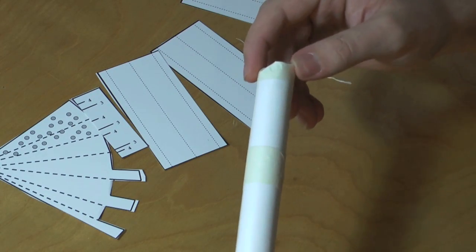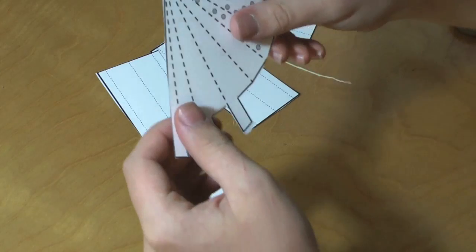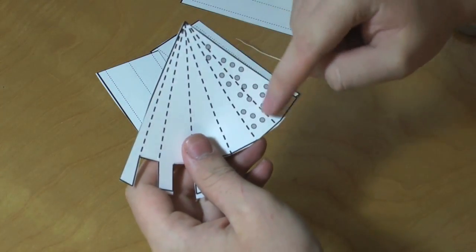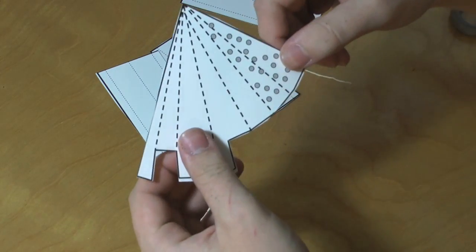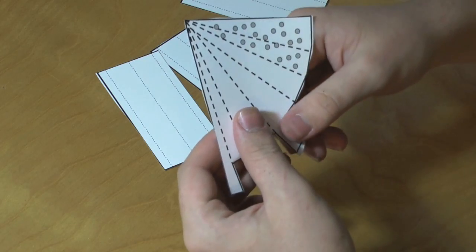So now we're going to build the nose cone. You can set that aside and pick up this piece. Now you want to fold along all the dotted lines. Where it has all the little dots, that's where you put the glue, but we're not going to be using glue, we're going to be using tape. So I'll do that right now.